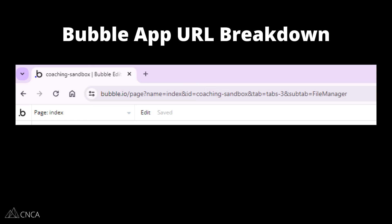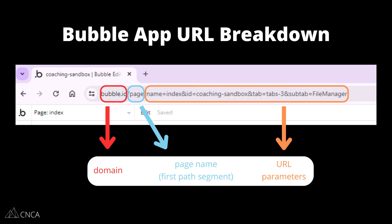You can even see URL parameters in action by just navigating your own app's editor — take a look at the address bar. You're going to see the domain, bubble.io, then the name of the page (in this case it's just the word 'page'), and a handful of parameters to identify the page that you're working on in your design, the ID of your application, and a couple of other parameters to take you to the specific part of the editor you're working in — whether it's workflows, styles, design, and so on.